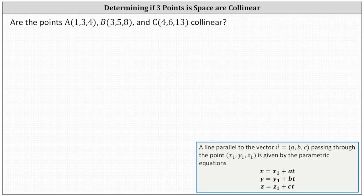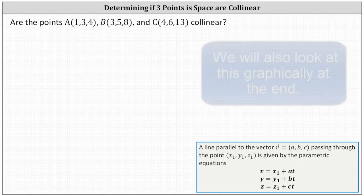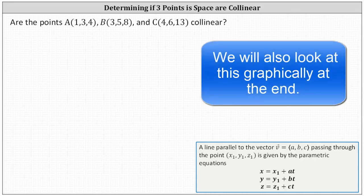In this lesson, we'll determine if three points in space are collinear, meaning all three points would be on the same line in space. To do this, we'll determine the parametric equations of the line passing through two of the points, then determine if the third point is on the line. If it is on the line, the points are collinear. If it's not on the line, the points are not collinear.